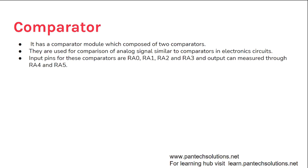The comparator module works like an analog signal comparator in electronic circuits. The analog input pins RA0, RA1, RA2, RA3 are the analog input pins where you can compare analog signals. This comparator is not available in 8051. You can accept analog input signals on these pins and compare them — similar to a hardware comparator in electronic circuits.